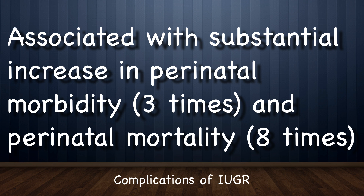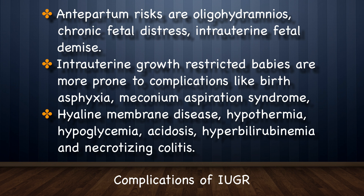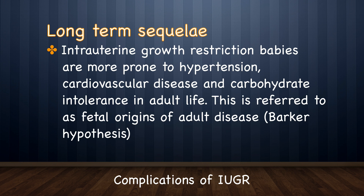What are the complications of IUGR? These fetuses are associated with a substantial increase in perinatal morbidity (about 3 times) and perinatal mortality (about 8 times). Antepartum risks include oligohydramnios, chronic fetal distress, and intrauterine fetal demise. Intrapartum, growth-restricted babies are more prone to birth asphyxia and meconium aspiration syndrome. After birth, complications include hyaline membrane disease, hypothermia, hypoglycemia, acidosis, hyperbilirubinemia, and necrotizing colitis. Long-term sequelae include increased susceptibility to hypertension, cardiovascular disease, and carbohydrate intolerance in adult life — referred to as fetal origins of adult disease, also known as Barker's hypothesis.